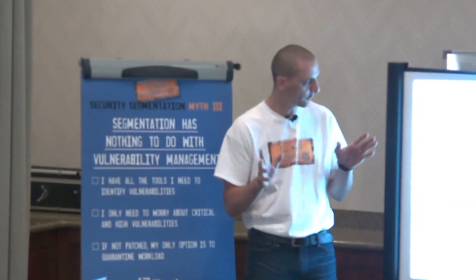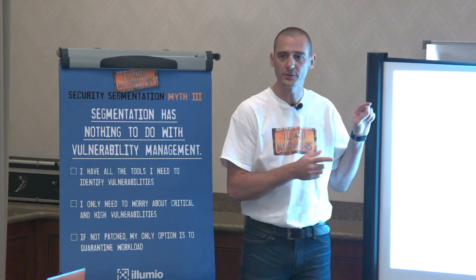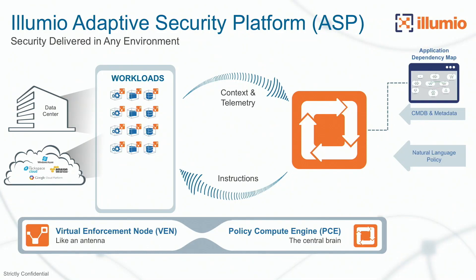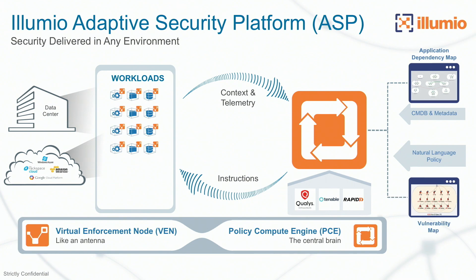Before we dive into the myth, let's refocus on the architecture. We have our agent, we have the PCE with all the context and telemetry going from the workloads to the PCE, and we have instructions coming from the PCE to change policies on the workloads. We also have CMDB integration, natural language for policy, and the ability to complement the information on the map using vulnerability scanner partners — we have three major partners shown here, but it can be any partner.